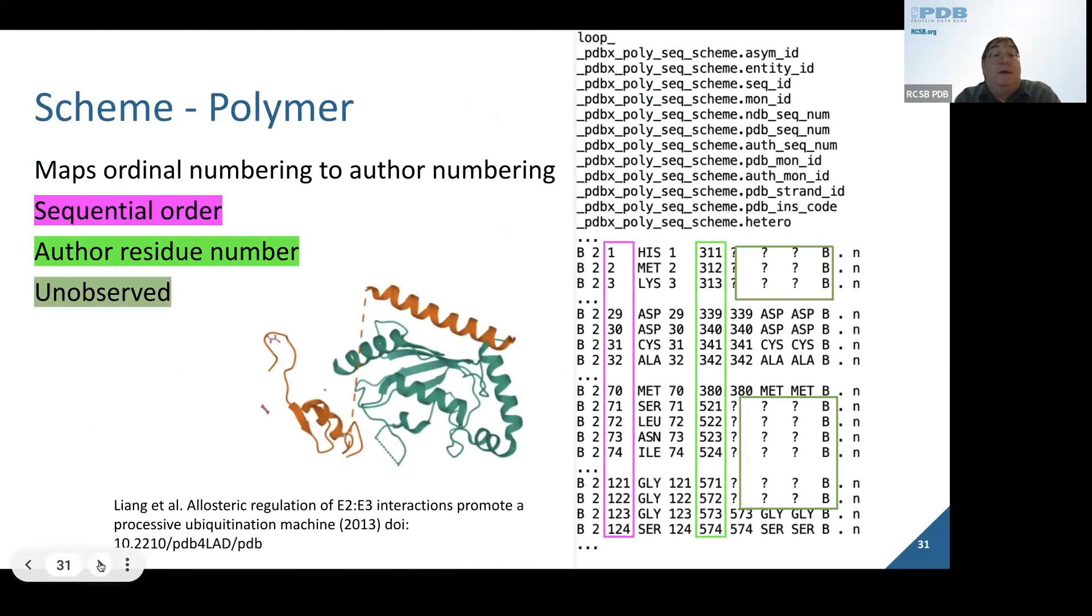We have a mapping which shows how the public author refers to residues. We will number things internally in a sequential order in the public files. However, bioinformaticians frequently want to know what is the sequence—I don't care what residue number the author chose, I just want to know it's the third residue in the sequence. This is showing in the schema, we have the first one in sequence is a histidine, but the author has chosen to use residue 311 in chain B.